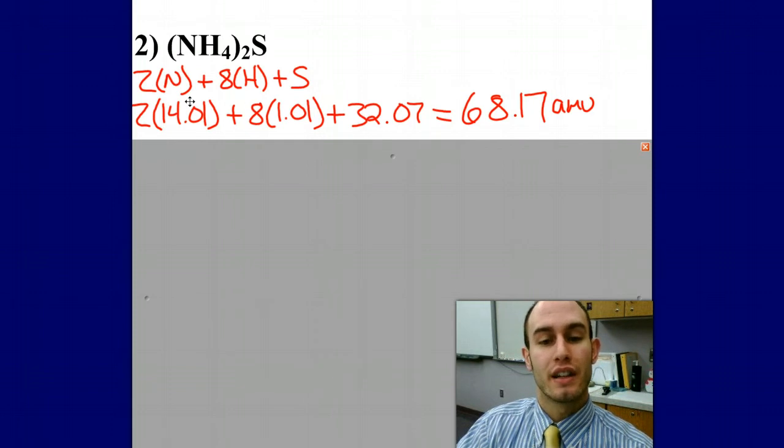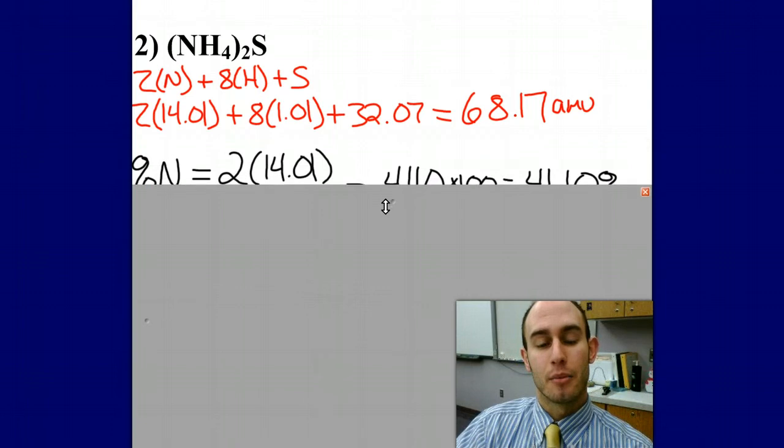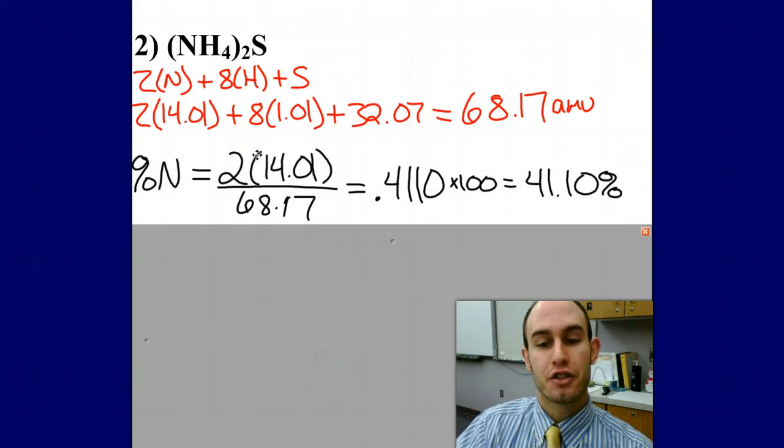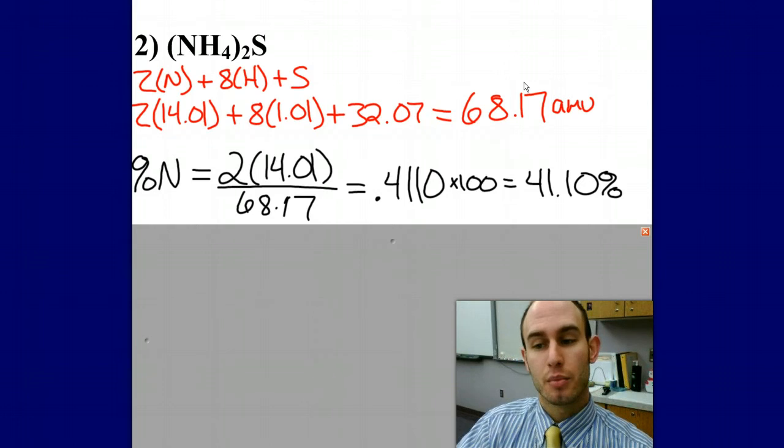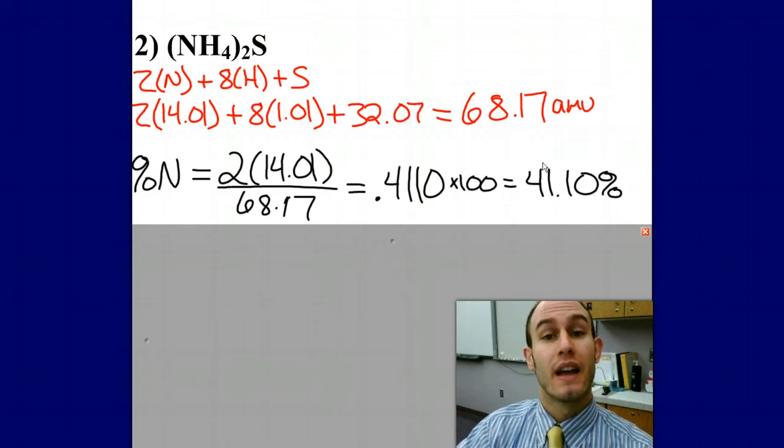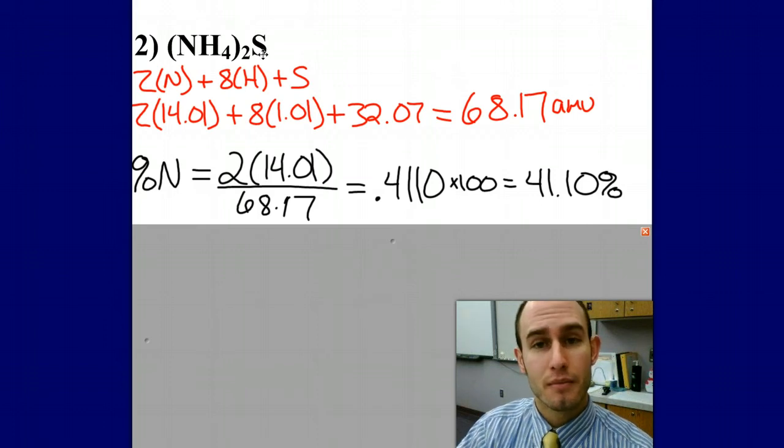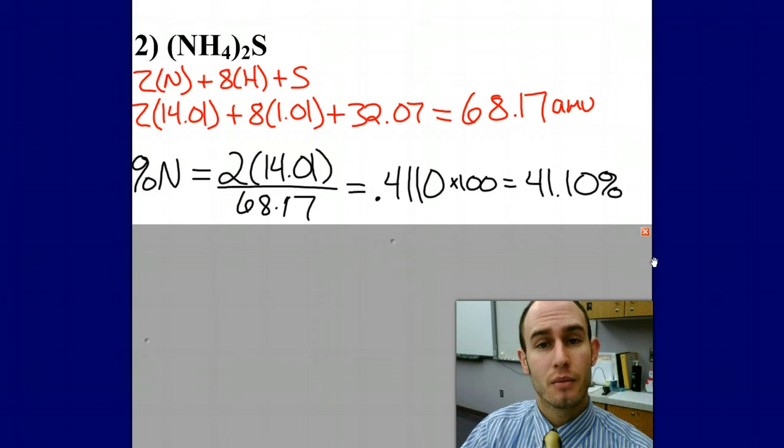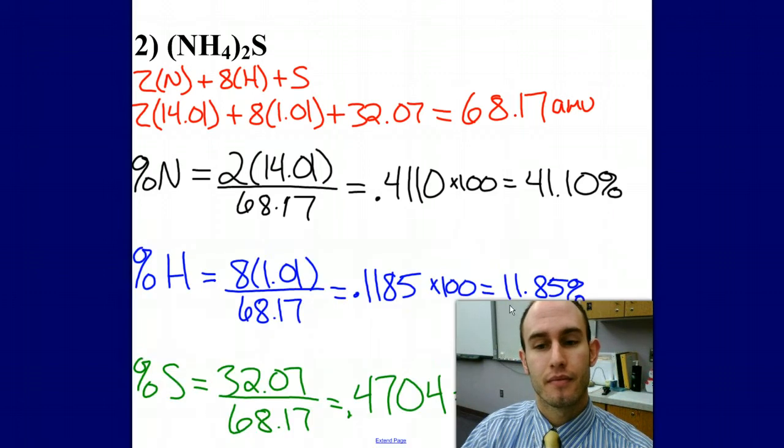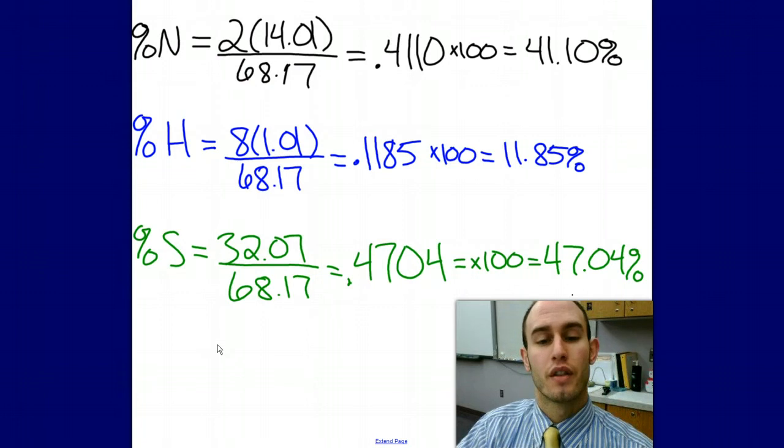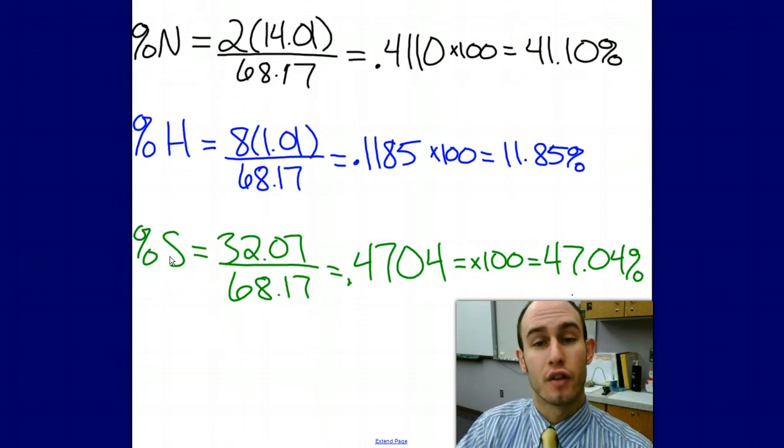We need to get the percentages of nitrogen in the compound. I'm going to take the mass of nitrogen—I have two of them—divided by the whole compound, multiplied by 100 to get my percentage. Attempt the percent composition for hydrogen and sulfur on your own. Pause the video and you can check your answers for the percent of hydrogen and sulfur in the compound.